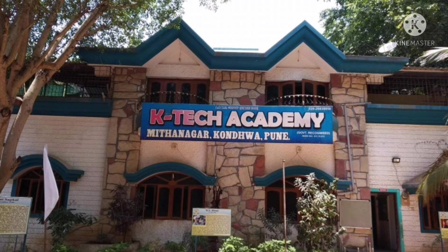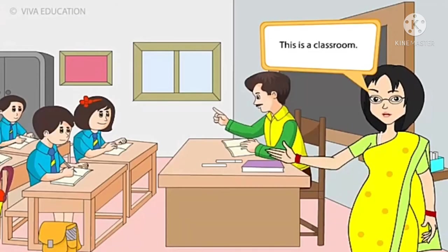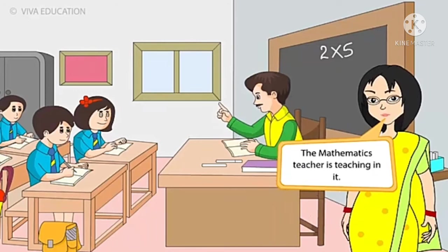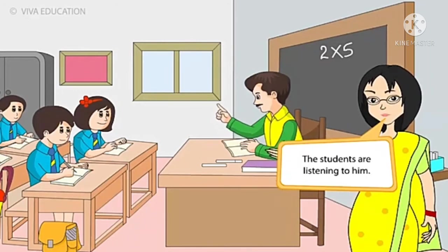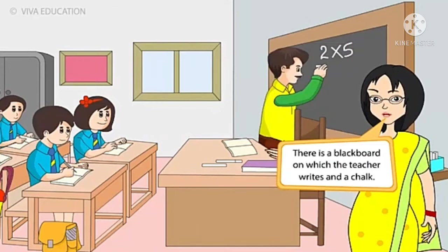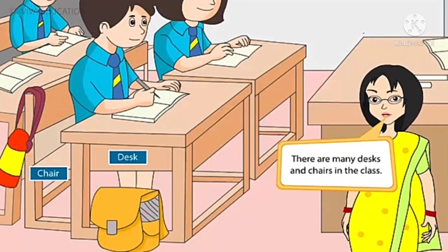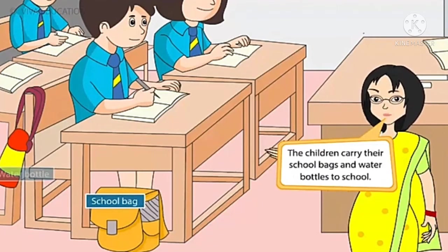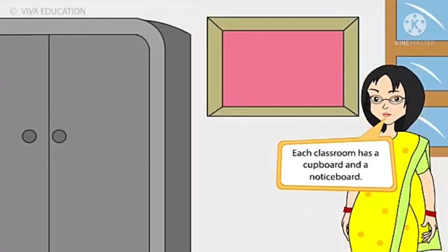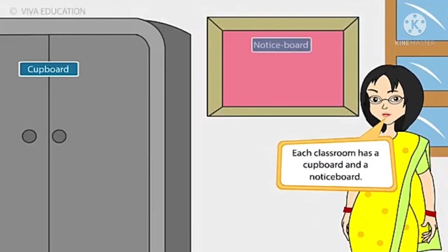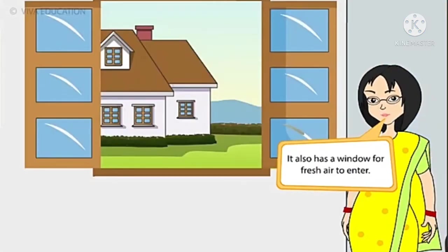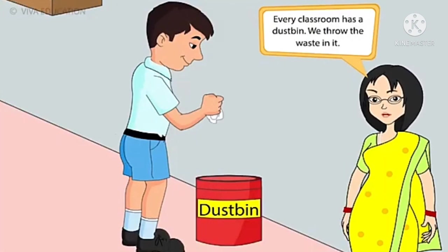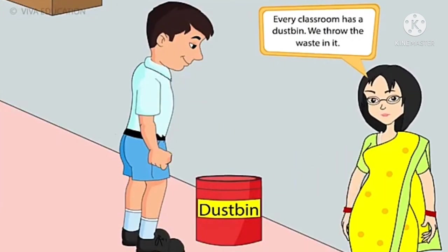Today I will be telling you what things we do in school and show you the classrooms. This is a classroom — the maths teacher is teaching maths and the students are listening. There is a blackboard on which the teacher writes with chalk. There are many benches and desks in the classroom. The children carry their school bags and water bottles to school. Each classroom has a cupboard, a notice board, a window for fresh air, and a dustbin where we throw waste.